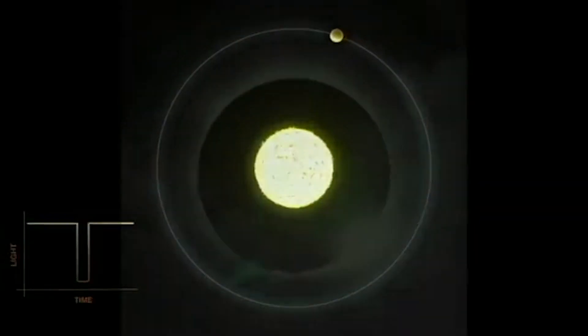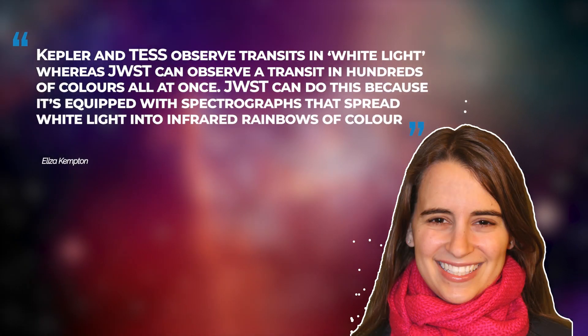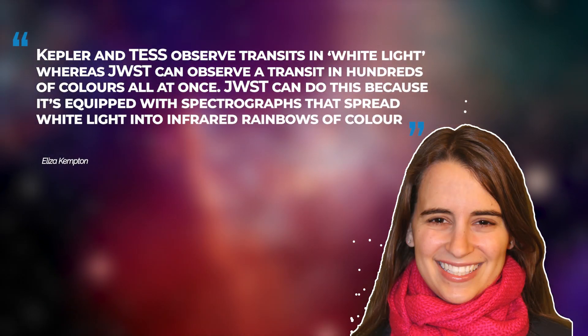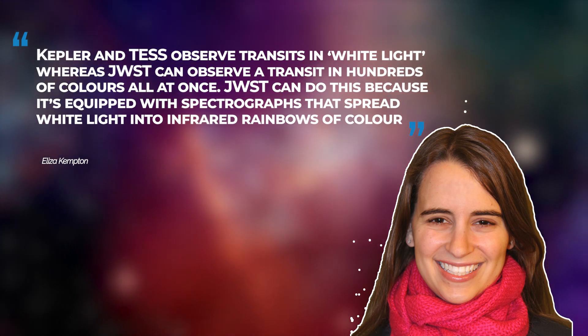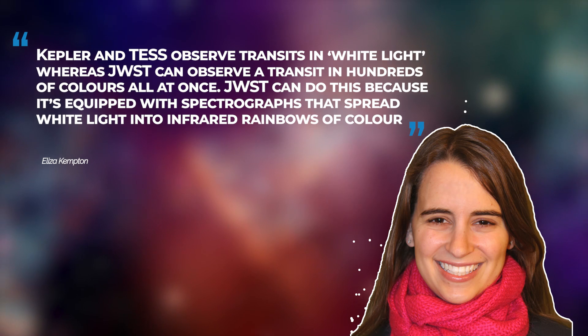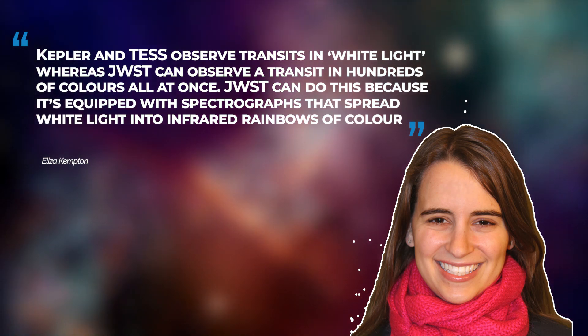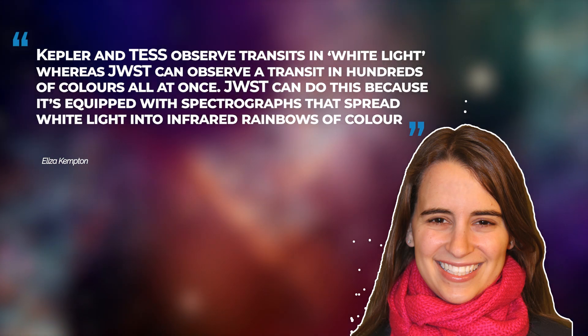How does the interplay between light and gas help us see the constituent parts of a planet's atmosphere? Well, in the words of Kempton, a research matter expert, Kepler and TESS observe transits in white light, whereas JWST can observe a transit in hundreds of colors all at once. JWST can do this because it's equipped with spectrographs that spread white light into infrared rainbows of color.